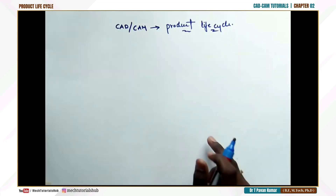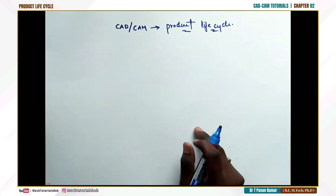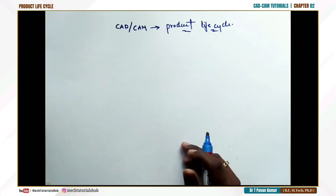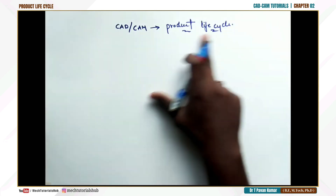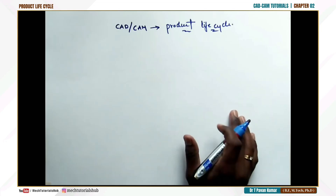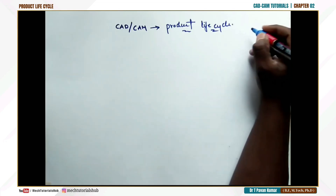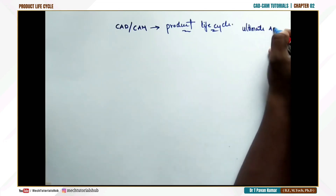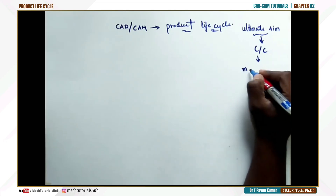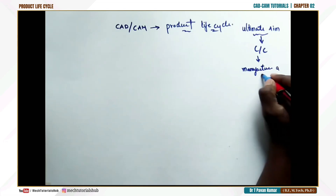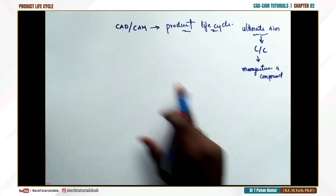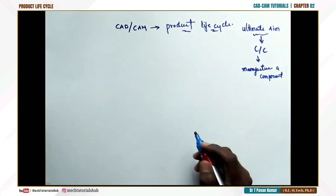Now I'm completely focusing on the product life cycle. This is the most important thing. This product life cycle covers the complete syllabus, irrespective of the university. Everything related to CAD/CAM — what is CAD, what is CAM — comes under product life cycle. Our ultimate aim is to manufacture a component.